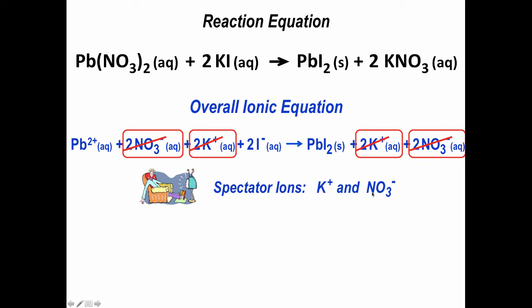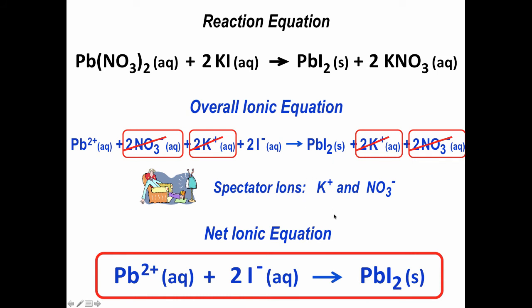And then we notice what happens is the heart of the reaction is that lead(II) plus ions combine with iodide ions, I minus, to make lead(II) iodide, PbI2 solid, and this is what we call the net ionic equation. And the net ionic equation is essentially the boiled down version of what actually happens.